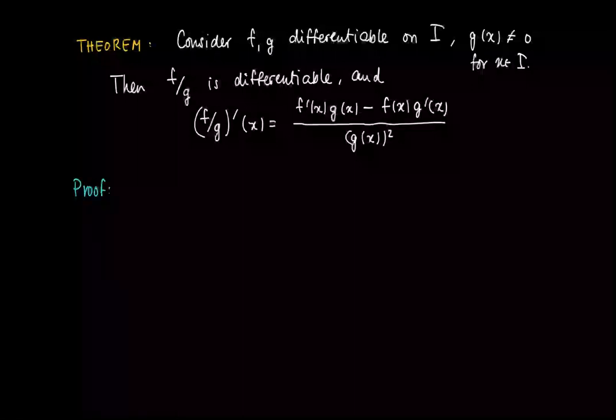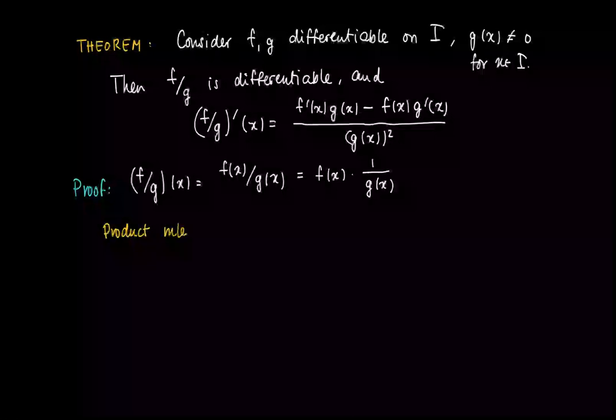The proof goes as follows. First write f over g as a product, f of x times 1 over g of x, and then use the product rule. The product rule says that f and 1 over g are differentiable, so the product is differentiable, and we may calculate the derivative. So we have f prime times 1 over g plus f times the derivative of 1 over g. But the derivative of 1 over g we just found in a previous clip.